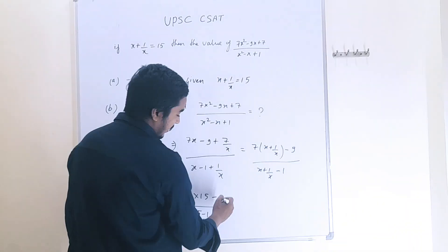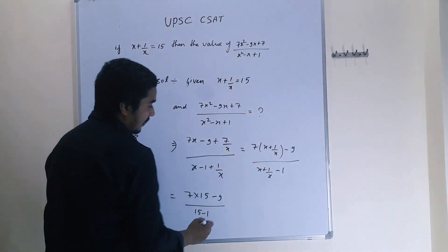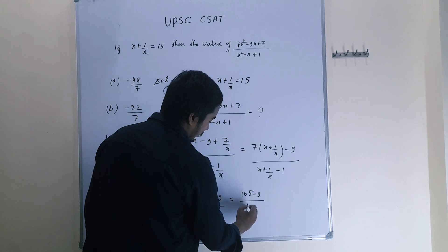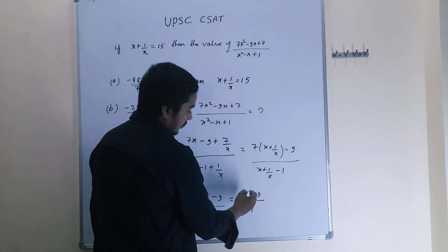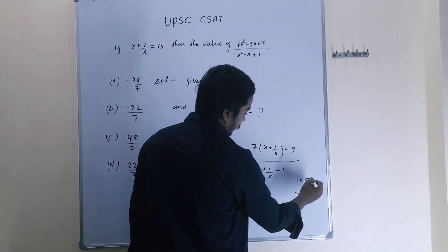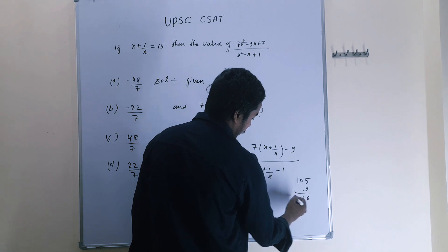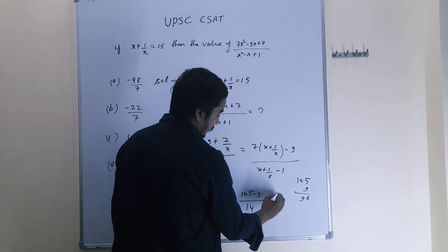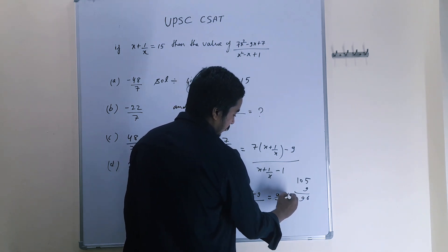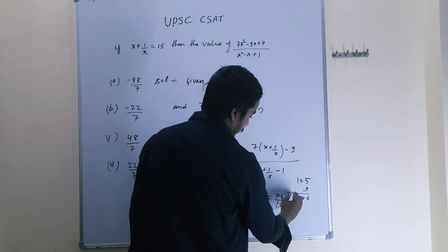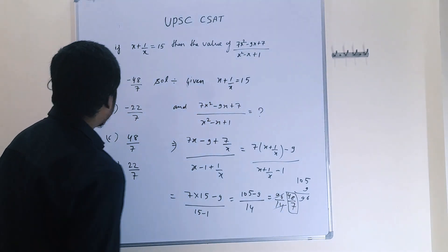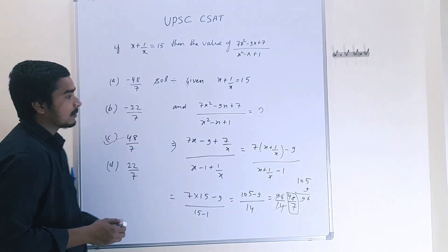That gives us 105 - 9 upon 14, which is 96 / 14. On simplifying by dividing both by 2, we get 48 / 7. So 48 upon 7 is the required answer, and option C is the correct answer.